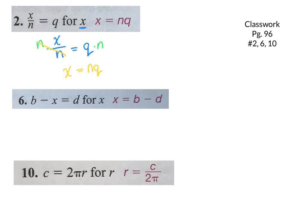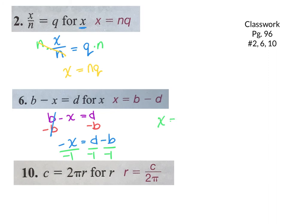For the next one, there were two different ways to do it. You have B minus X equals D. You could subtract the B — it's a positive B — leaving negative X equals D minus B. You do not have X by itself; you still have a negative 1 there. So divide everything by negative 1: negative X divided by negative 1 is positive X; D divided by negative 1 is negative D; negative B divided by negative 1 is positive B. That's one way.